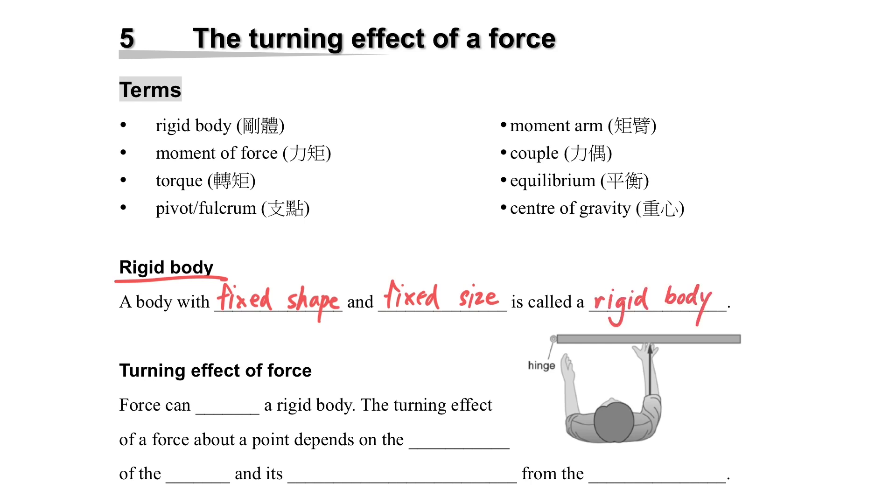For example, a rock, a stone, something that is hard, then usually it is a rigid body.